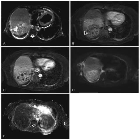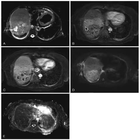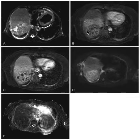Images B and C are both T1 sequences and we're going to see the pattern of enhancement. We notice there's some enhancement around the lesions. It may not be entirely conspicuous because the liver itself is also having some enhancement, but there's definitely some enhancement there.